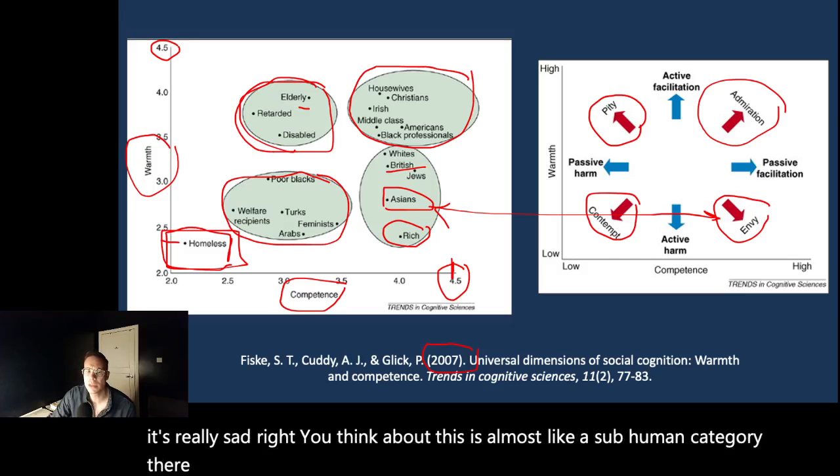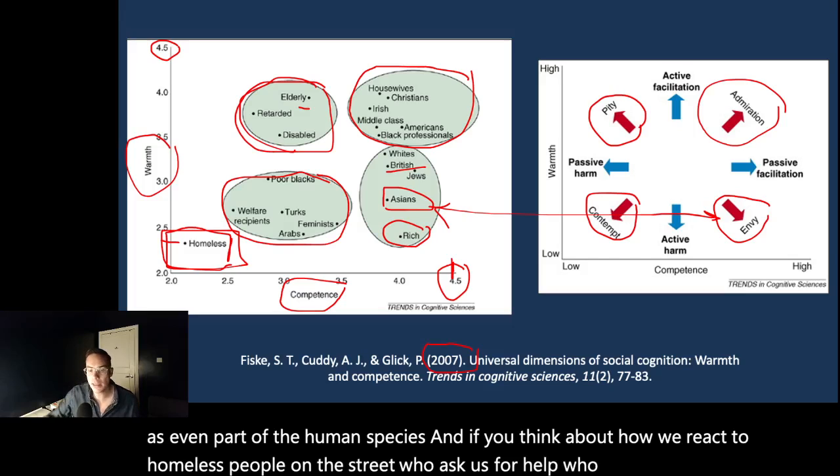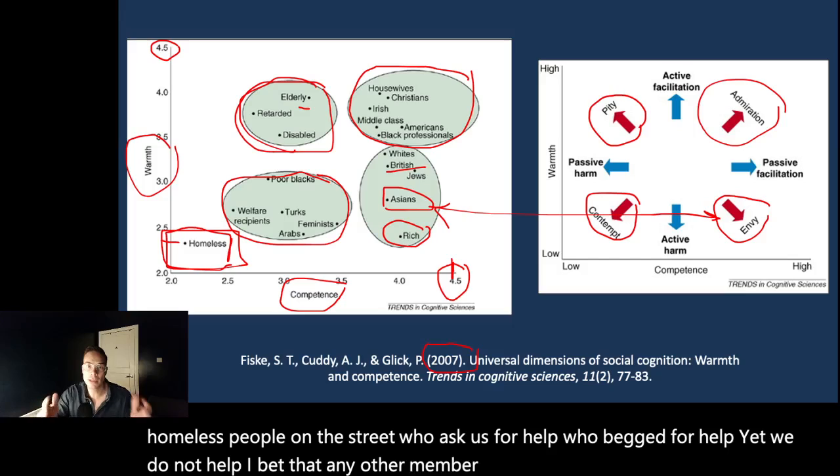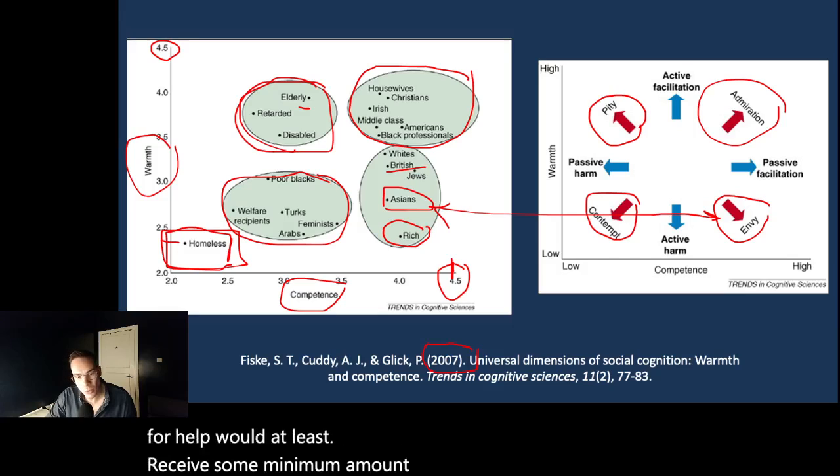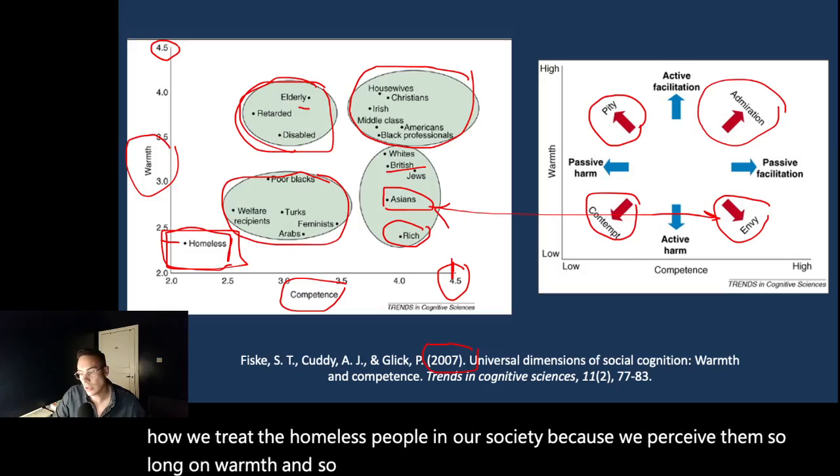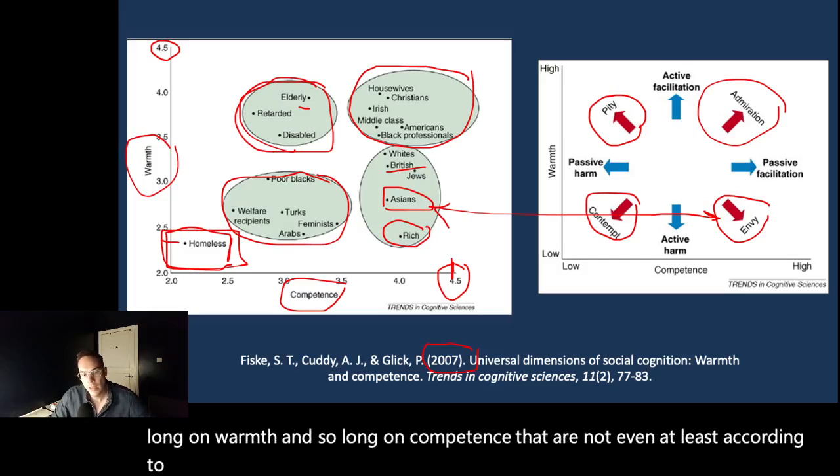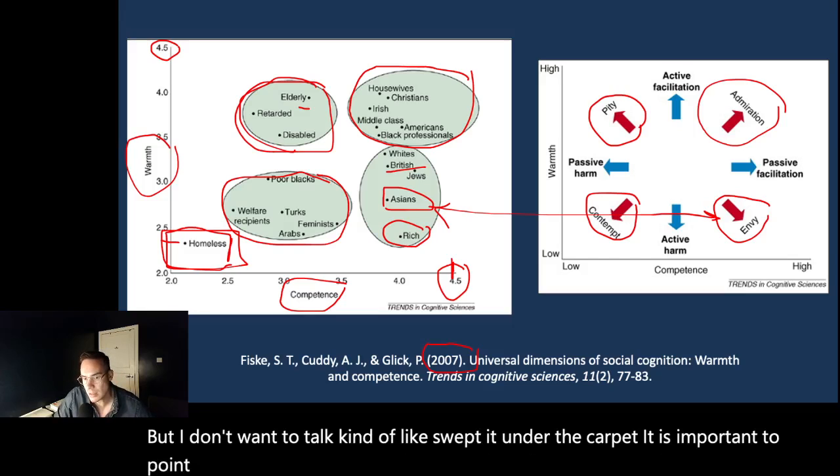They're so low on warmth and competence that often they are not regarded as even part of the human species. And if you think about how we react to homeless people on the street who ask us for help, who beg for help, yet we do not help. I bet that any other member of any of these groups who begs you for help would at least receive some minimum amount of help, if not more. But hence, this can explain how we treat homeless people in our society, because we perceive them so low on warmth and so low on competence that they are not even, at least according to this structure, human. Very sad, but I don't want to sweep that under the carpet. It's important to point out, and it's important to understand that these dimensions matter.